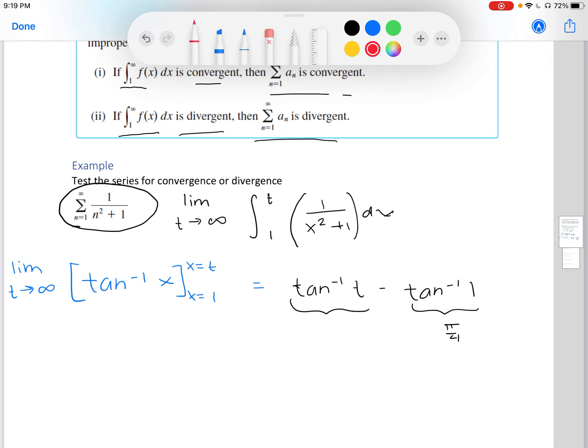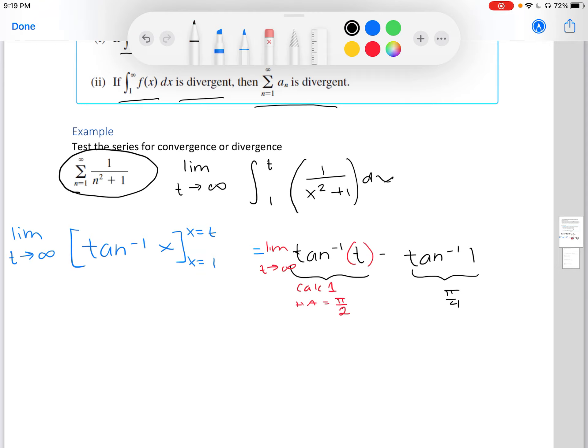For this one here, you want to apply the limit. The limit as t is approaching infinity. Now for this one, recall your calc 1 knowledge - it's approaching the horizontal asymptote pi over 2. So we're left with pi over 2 minus pi over 4, which gives us, once you get a common denominator, pi over 4.